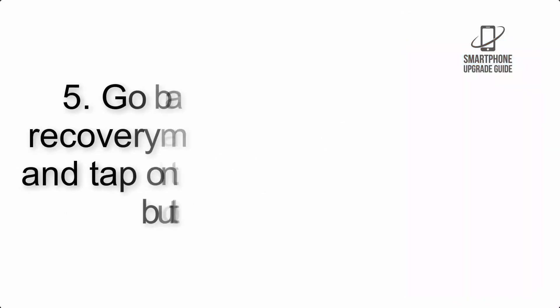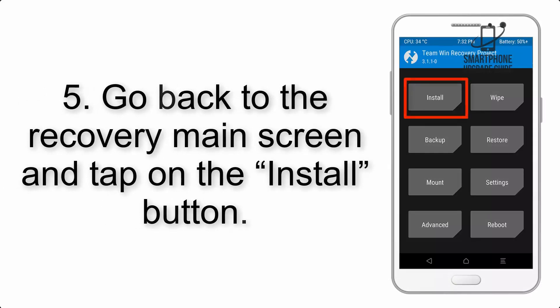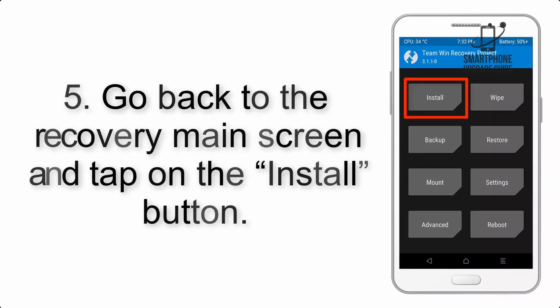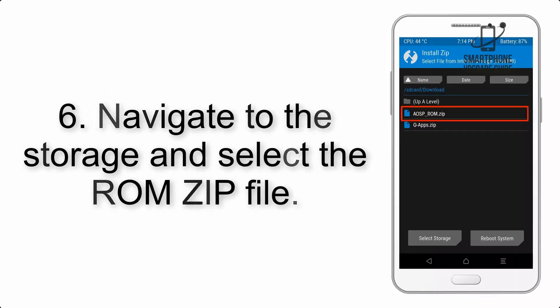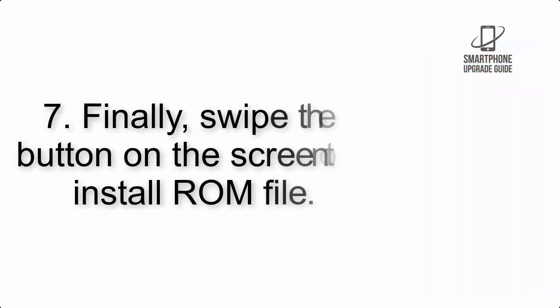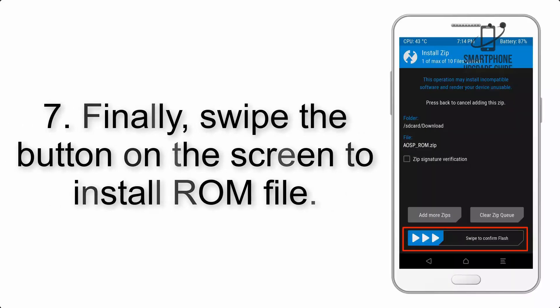Step 4: Swipe the button to wipe the device. Step 5: Go back to the recovery main screen and tap on the Install button. Step 6: Navigate to the storage and select the ROM zip file.